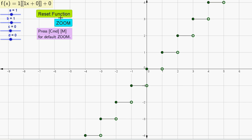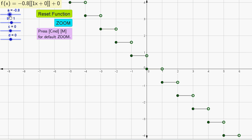So for example, if I reset the function, if I want to make this into the least integer function instead of the greatest integer function, I just need to make A negative and I need to make B negative.